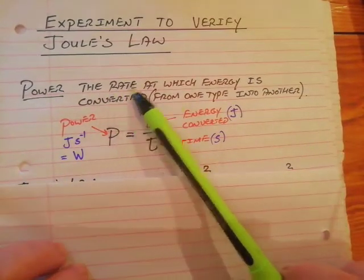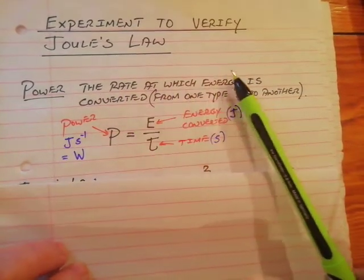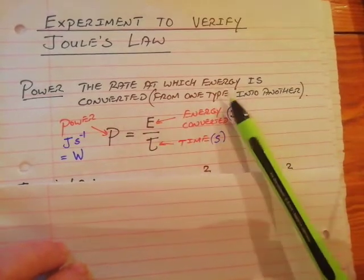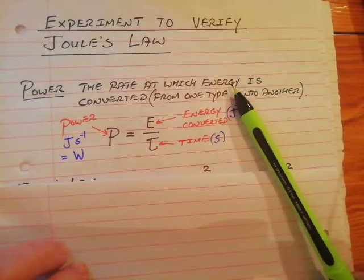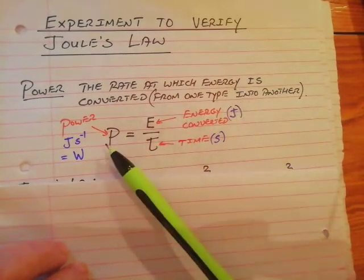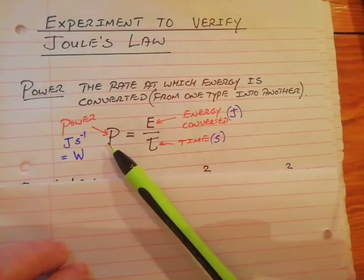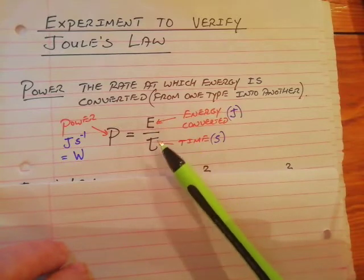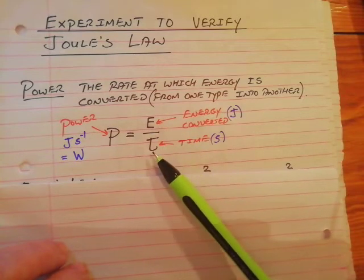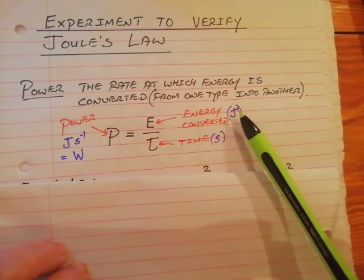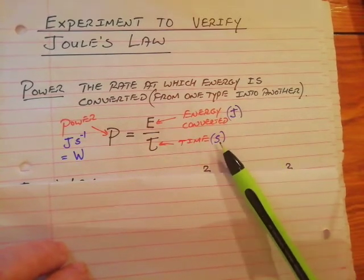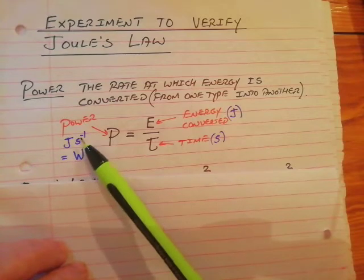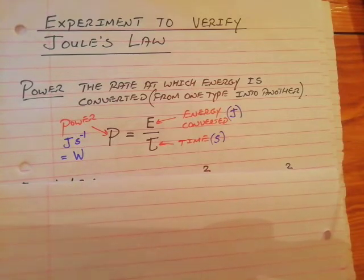Power is defined as the rate at which energy is converted from one type into another. In a formula, power is energy converted divided by time — energy in joules, time in seconds, power in joules per second or watts.